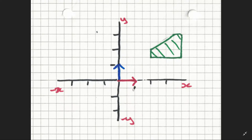The first thing to worry about is this is my space that I'm going to rotate. I've drawn a little shape that I might want to rotate, but essentially I can rotate the whole space — I don't need to just rotate that shape, I can rotate any point in this space. I've got my x and y axes: y goes up, negative y goes down, negative x goes left, and positive x goes to the right.